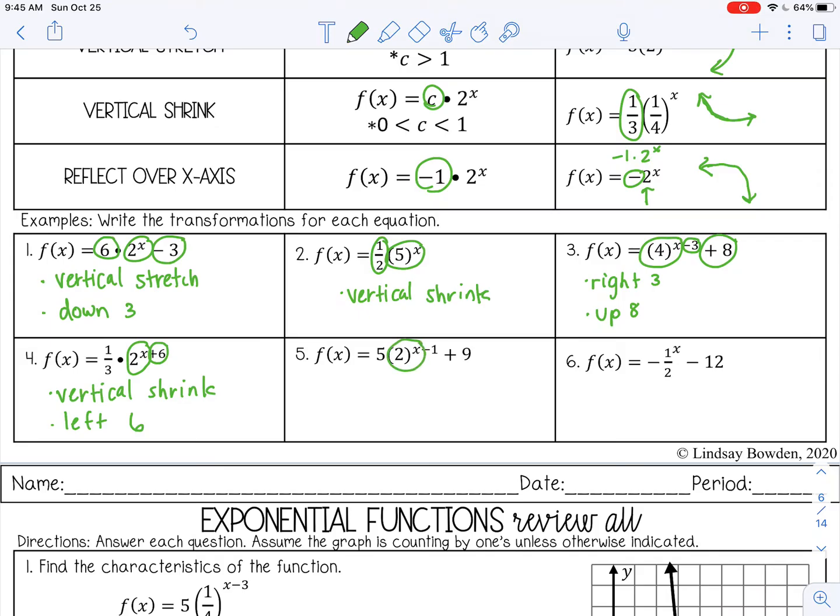Number 5. Here's our function 2 to the x power. So I have that 5 out front. That's a vertical stretch. I subtracted 1 from the exponent. That moves it right 1. And then I added 9 at the end. That moves it up 9.